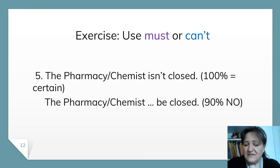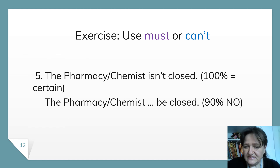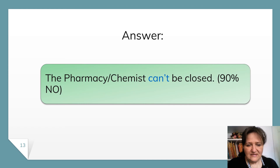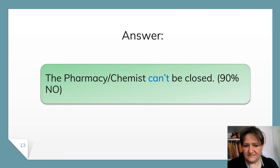Now, the pharmacy or chemist isn't closed — we are certain, 100% yes. Then use a modal verb to express 90% no — it's a guess, a deduction. The pharmacy or chemist isn't closed, so here we have 100% yes, we are certain. The pharmacy or chemist can't be closed — that's 90% no. It can't be closed.